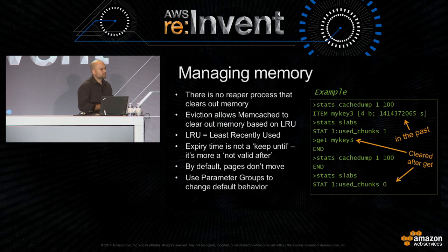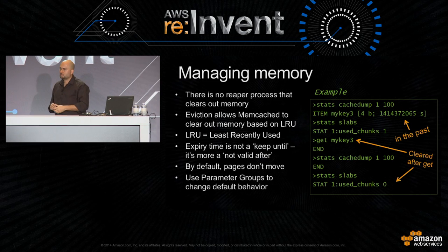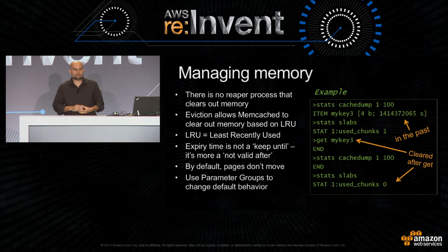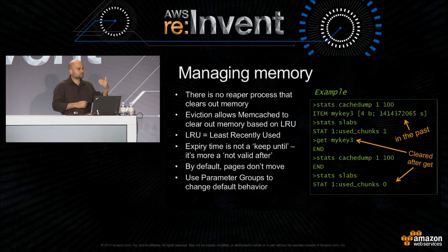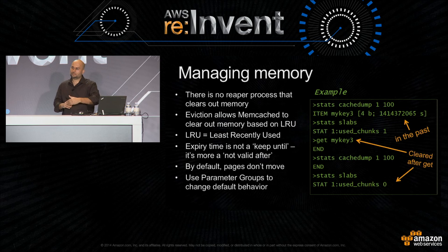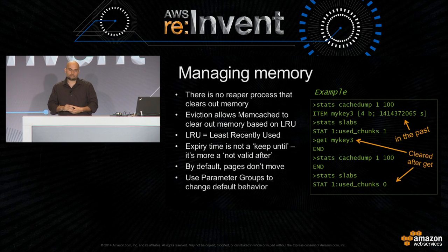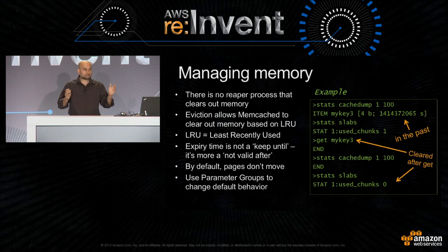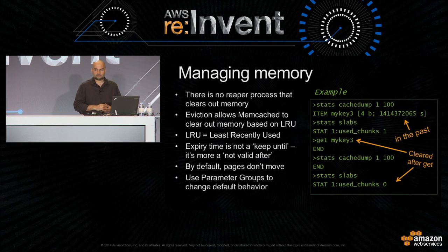Then the question becomes: 'I thought when I set an object, I set an expiration.' The key misnomer: the expiry really has to do with 'this data is valid up until this point' — it's not 'keep this data until this point.' So if you request that key after that expiration point, Memcached says, 'Hey, that's not valid — that's past the expiration date. This key has gone bad. We have to throw it out.'